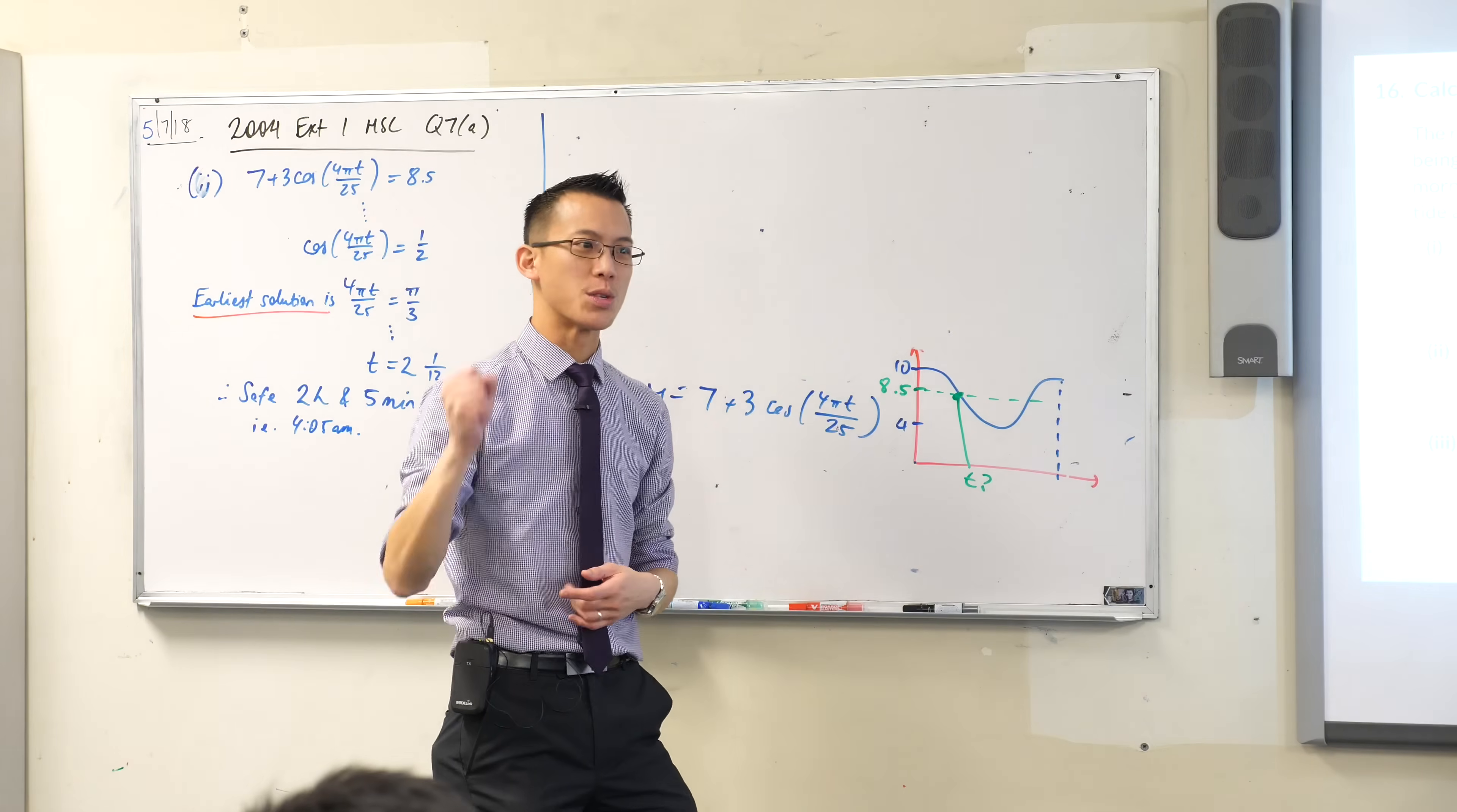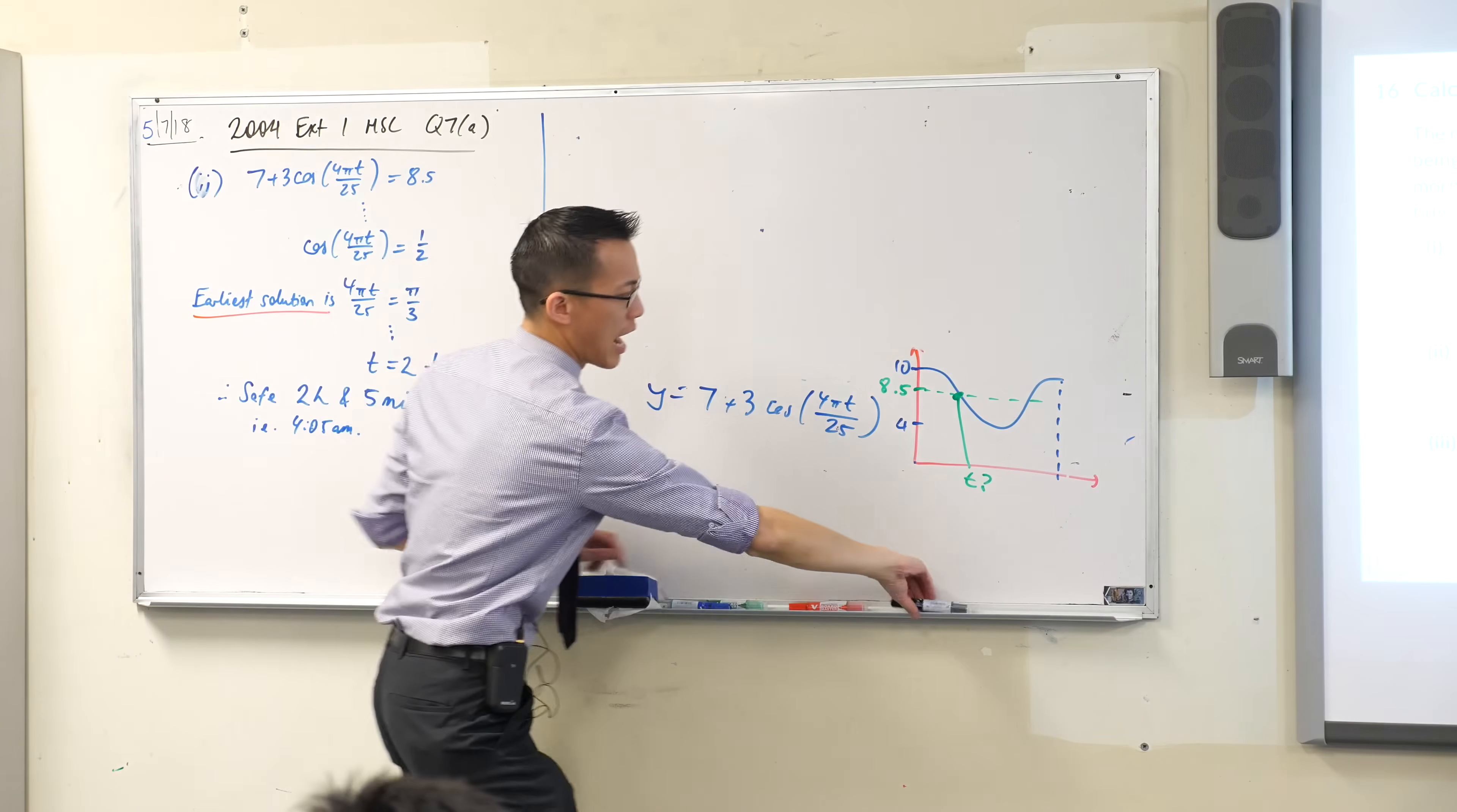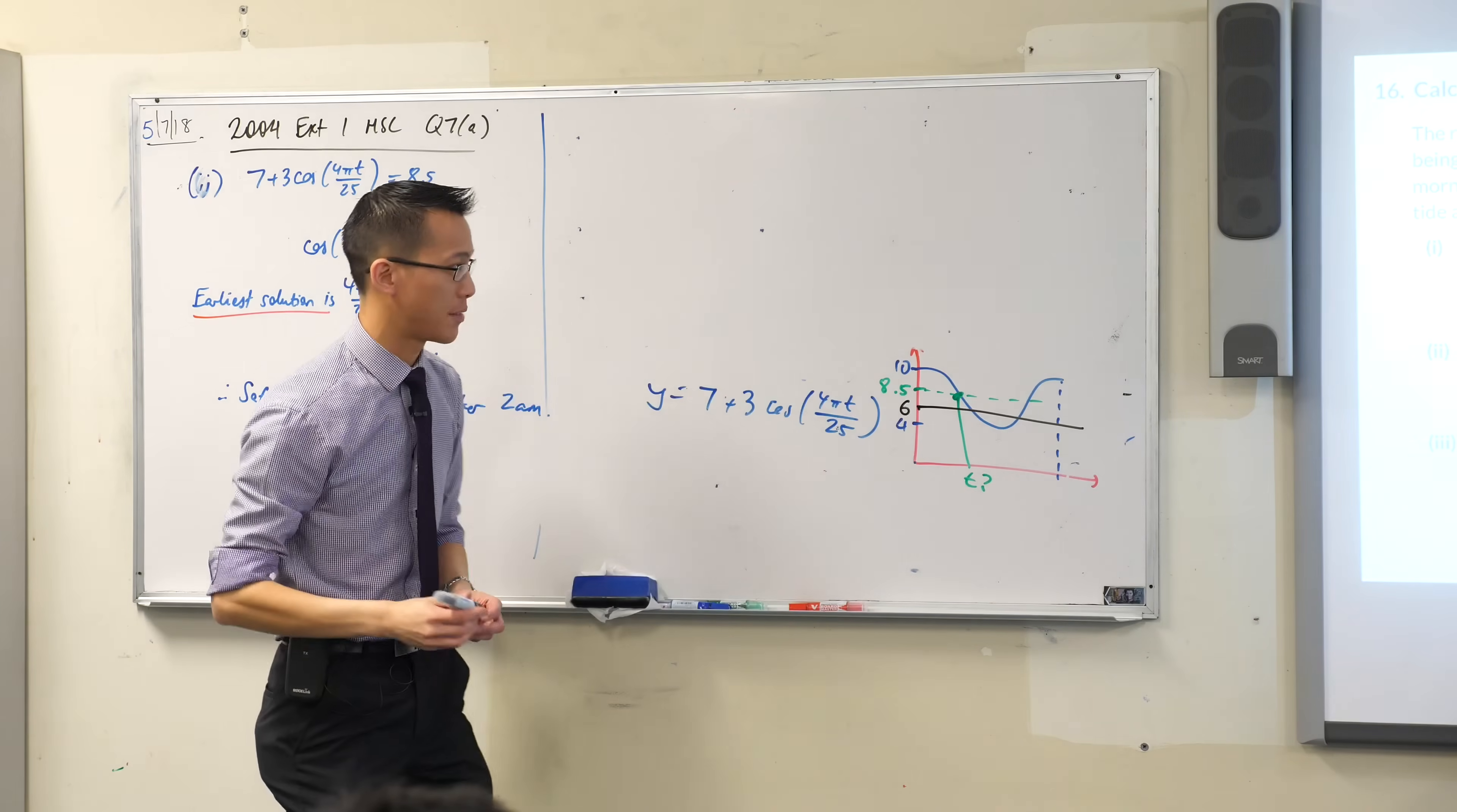Question: what is two meters above the low tide level? Low tide is four, so two meters above that is six. And that seems like important information, I'm going to pop that onto my graph. Something like this. There's my safe level, okay?